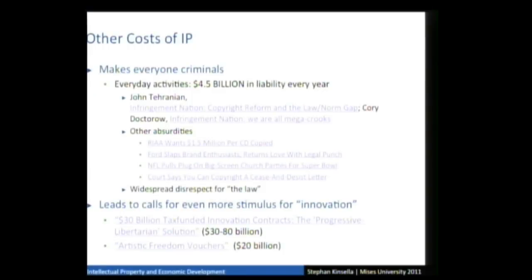It's scary. Another cost of IP: it makes everyone a criminal. A study by John Tehranian estimates that through typical activities most internet users engage in every year, we each rack up a liability of $4.5 billion per year, each person. This is literally true — this is the effect of these laws. You can see it in notorious examples like Jamie Thomas, a single mother who downloaded around 18 songs and ended up being fined millions of dollars.